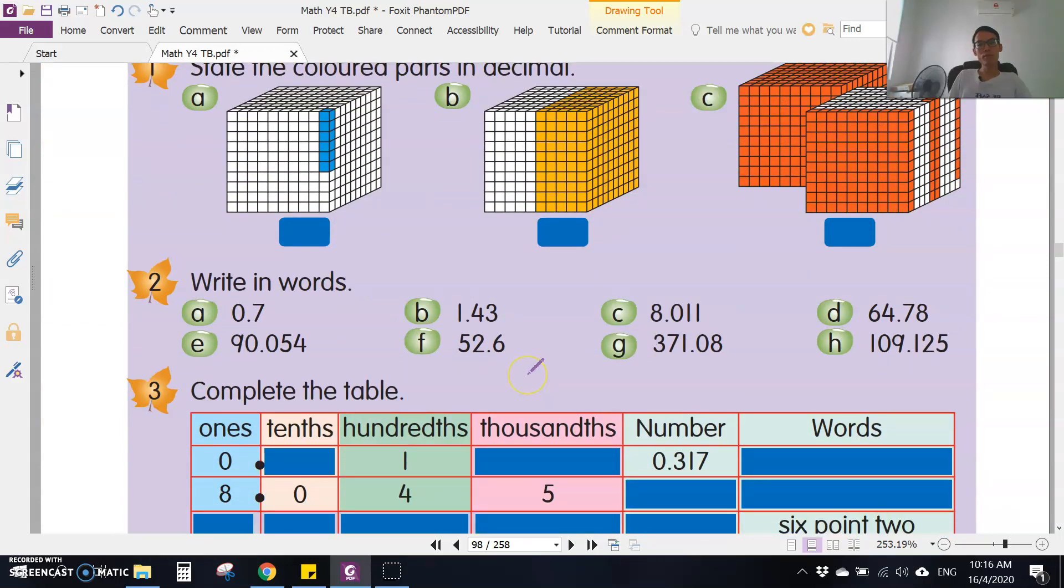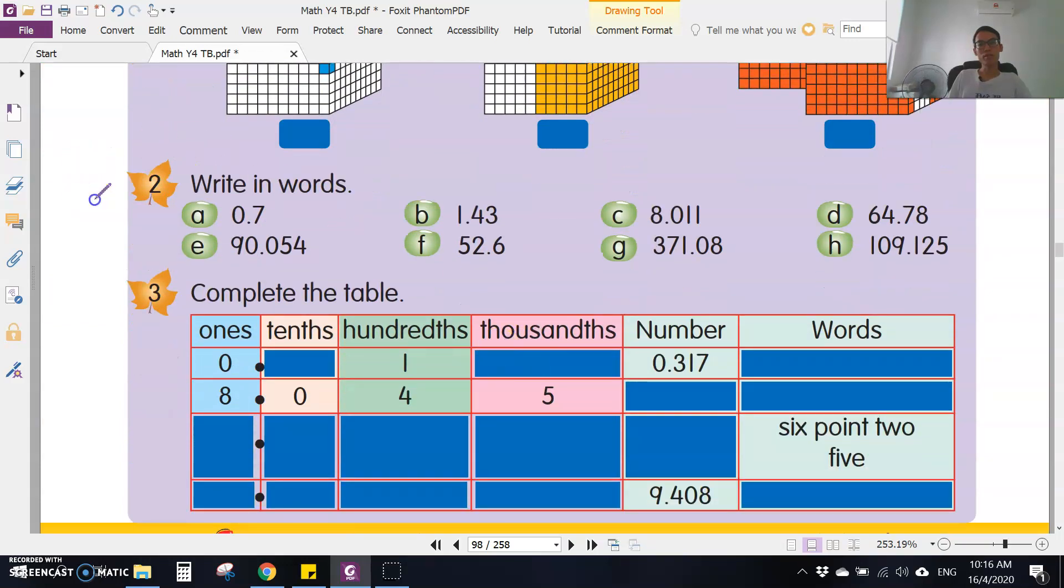Okay, so your homework for today. Very simple. Question two and question three. Question two means a, b, c, d, e, f, g, h, all of them. You have to write these decimals in words. For example, the first one is 0.7, so you just write zero point seven. Or if you want to answer in Bahasa, you can write kosong perpuluhan tujuh.